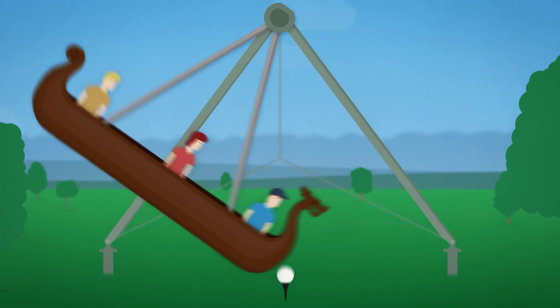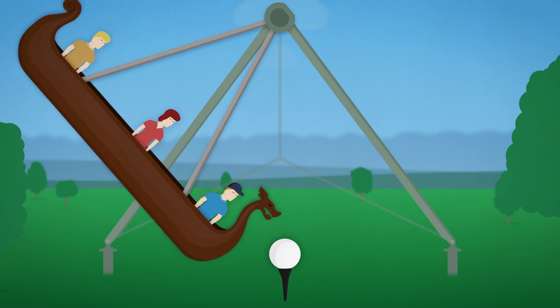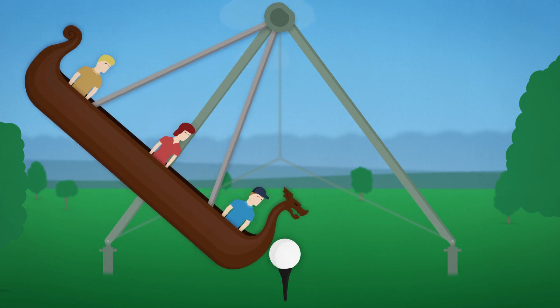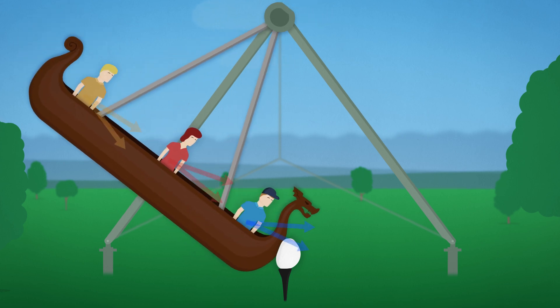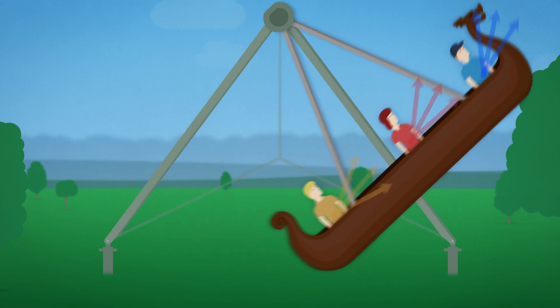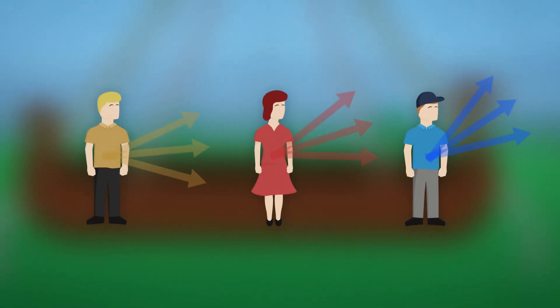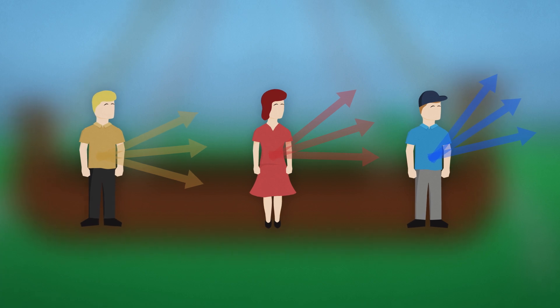Let's add a ball again to combine the when and the where. Here is first touch, maximum compression, and separation. See how the direction the arrows are pointed vary depending on when it is measured and where it is measured.